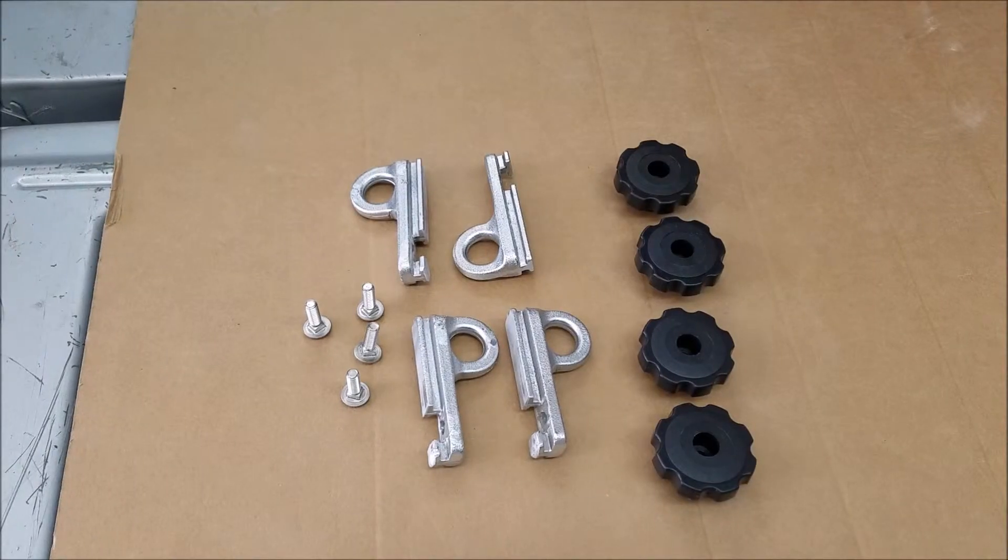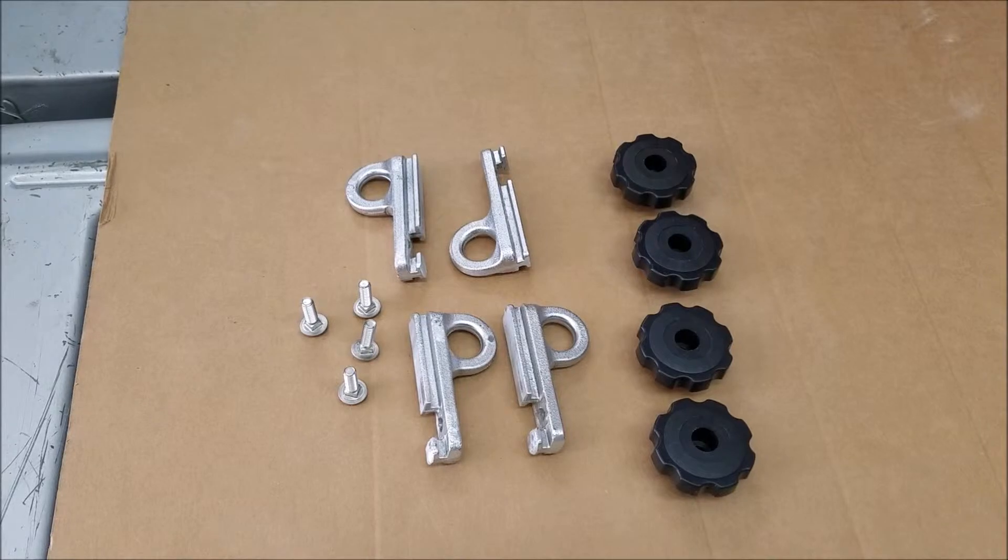The System 1 AK-6 Cargo Anchors include four anchors, carriage bolts, and knobs.